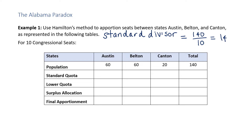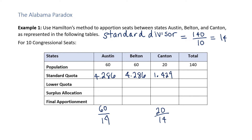To get the standard quota for Austin, you take the Austin population of 60 divided by 14 — have your calculator handy. This result is 4.286, and since Belton's population is the same, the standard quota for Belton is also 4.286. Compute 20 divided by 14 to get Canton's standard quota, and that turns out to be 1.429. In Hamilton's method, we start by taking the lower quota of each area: Austin gets 4, Belton gets 4, and Canton gets 1. Add those together and the result is 9, which means we still have one unaccounted-for congressional seat.